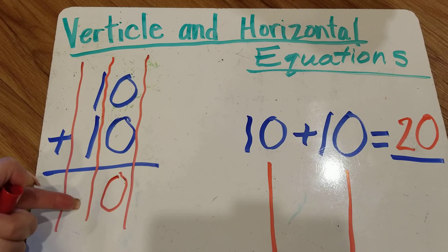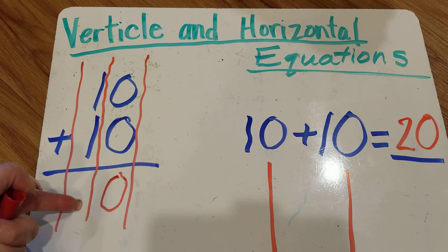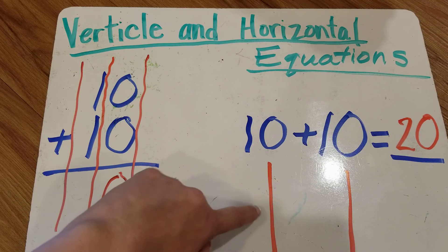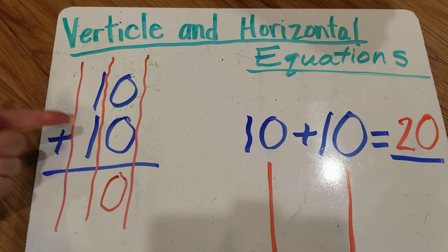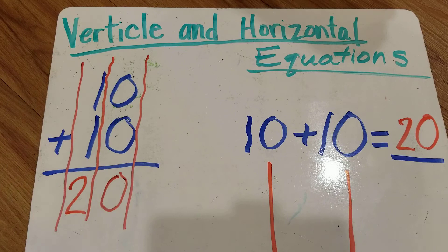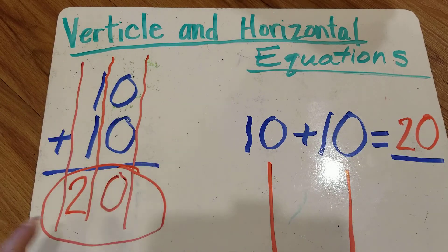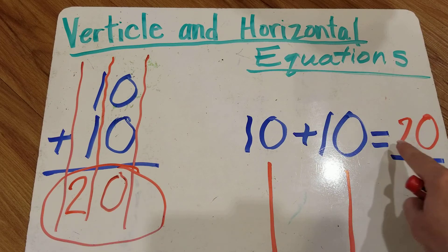If you need practice with place value look at my previous lesson on place value. This is the tens column because we're counting groups of 10. One 10 plus one 10 equals two tens. Do you see we got the same answer? 20 and 20.